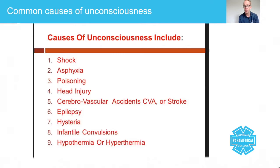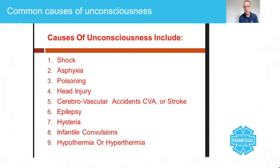Cerebrovascular accidents, or a stroke, are caused by either a bleed or a blockage. A bleed is called a hemorrhagic stroke, and a blockage is called an ischemic stroke. Epilepsy is a type of convulsion — the patient has been diagnosed as having mal-electrical impulses in the brain, which cause full-body convulsions.